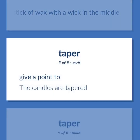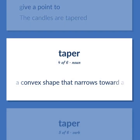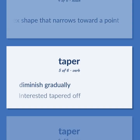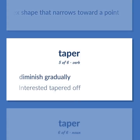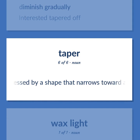Taper: to give a point to. The candles are tapered. A convex shape that narrows toward a point. To diminish gradually — interest tapered off. The property possessed by a shape that narrows toward a point, as a wedge or cone.